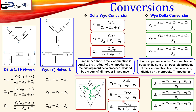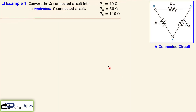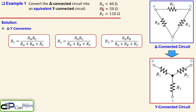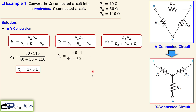Let's look at examples. Example 1: we have a delta-connected circuit with given values for RA, RB, and RC, and we want to convert it to an equivalent Y-connected circuit. Applying the delta-to-Y formulas and substituting the values, RB times RC gives 50 times 110 divided by the total sum. We get R1 equals 27.5 ohms, R2 equals 22 ohms, and R3 equals 10 ohms.